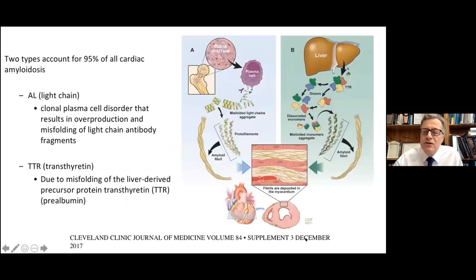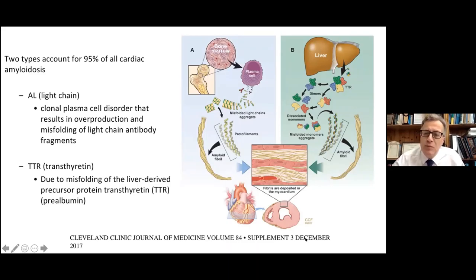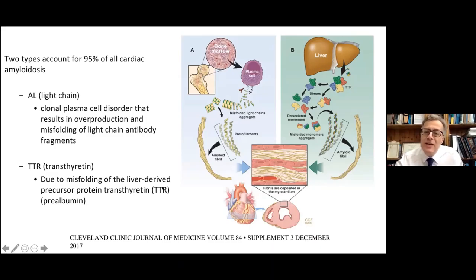As cardiologists, we see two predominant types of amyloidosis in the heart. The first is AL amyloidosis, related to deposition of light chains associated with plasma cell dyscrasias. And until relatively recently, this was thought to be the most common type we encountered. But what is now very clear is that the overwhelming majority of amyloidosis we see in the clinic is caused by the deposition of transthyretin, TTR.